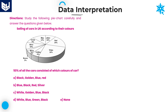First of all, we need to read the information carefully. After that, according to the information, we need to solve the questions. The information provided in this pie chart is about the selling of cars in UK according to their colors.